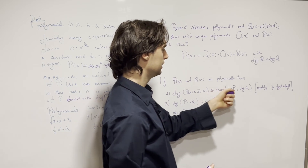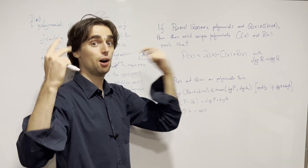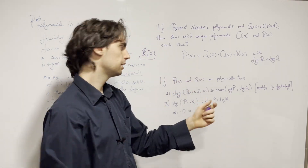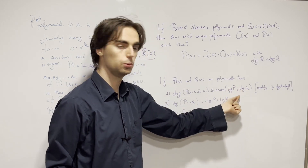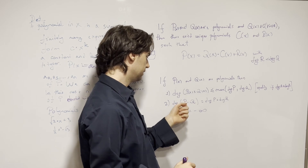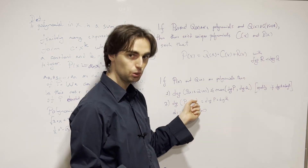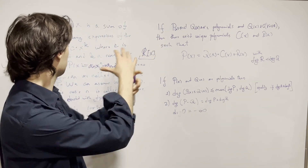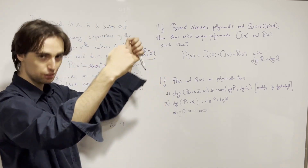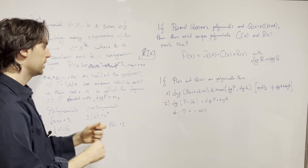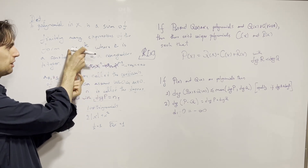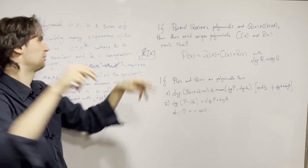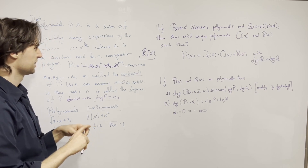This is the definition of a polynomial, and from this definition all of these rules follow. For example, the degree of p of x times q of x is equal to the sum of the two degrees — because once you multiply everything together you still have a polynomial. When you add or subtract two polynomials you again get a polynomial, since you still have a sum of terms of the required form.